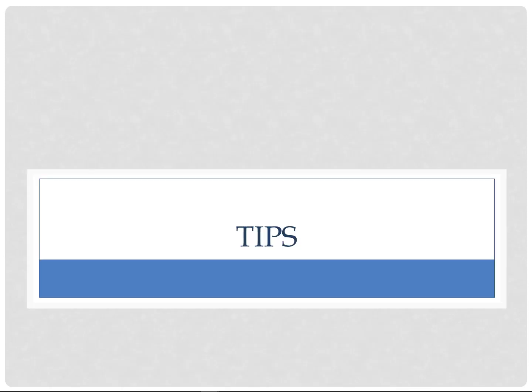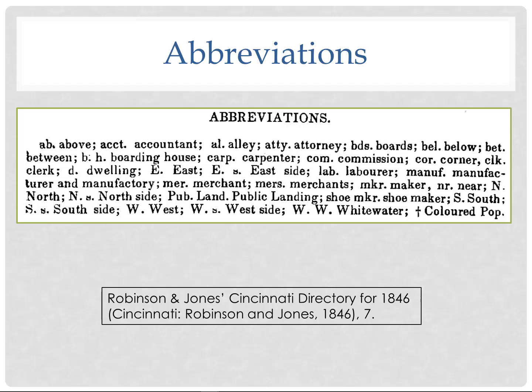Some tips for getting the most out of city directories: First, read and understand all abbreviations used in the directory. Publishers squeezed the maximum amount of information into the minimum space using many abbreviations. Make sure to find the key and read and understand all of those abbreviations so you know what you're looking at.